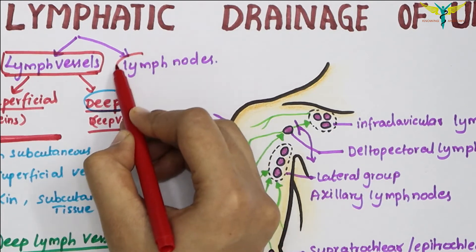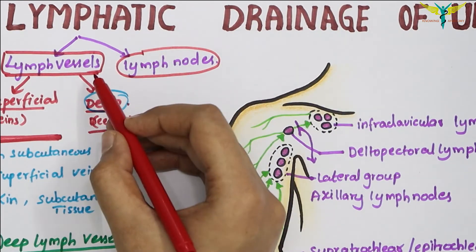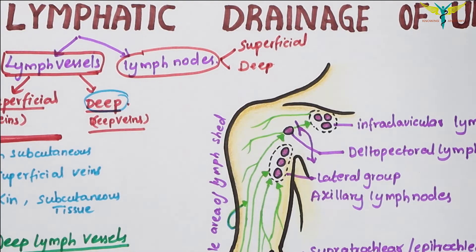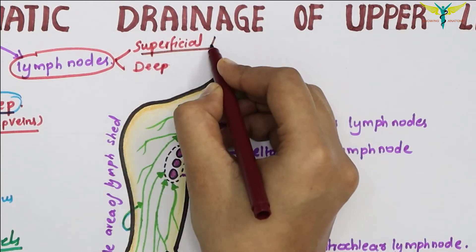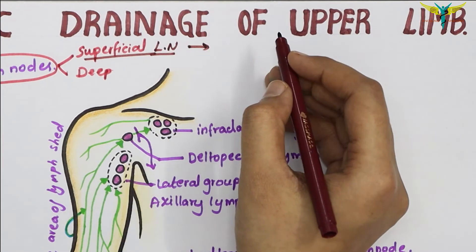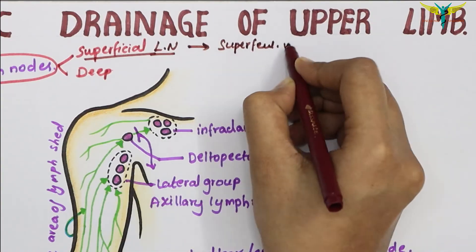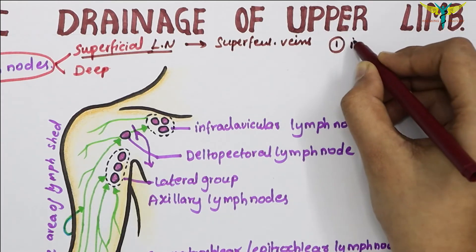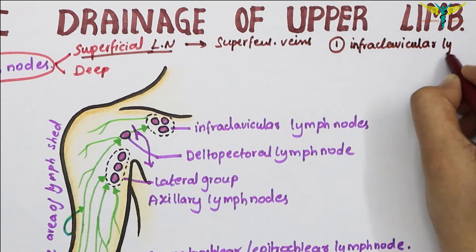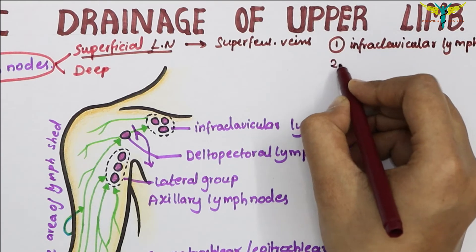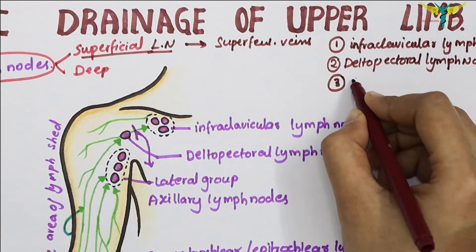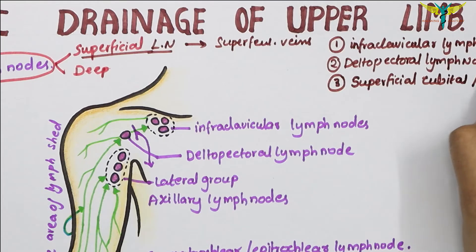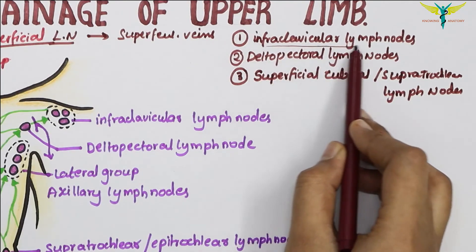Now let's talk about the lymph nodes of the upper limb. Like the lymph vessels, the lymph nodes are also divided into superficial and deep. The superficial lymph nodes lie along the superficial veins. The superficial lymph nodes of the upper limb are: the infraclavicular lymph nodes, the delto-pectoral lymph nodes, and the superficial cubital or supratrochlear lymph nodes.